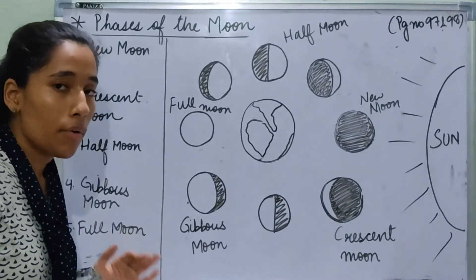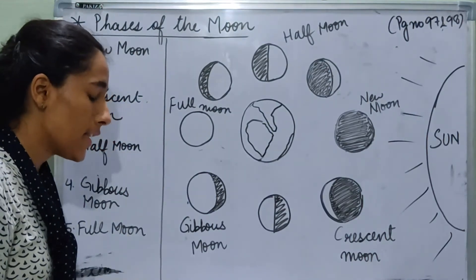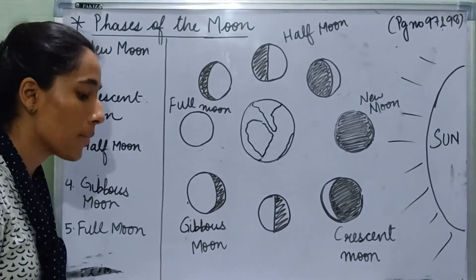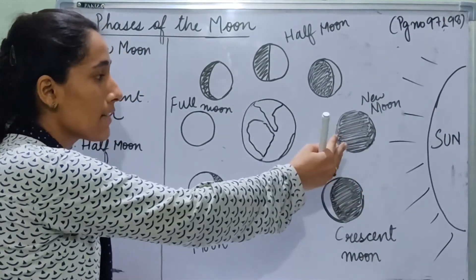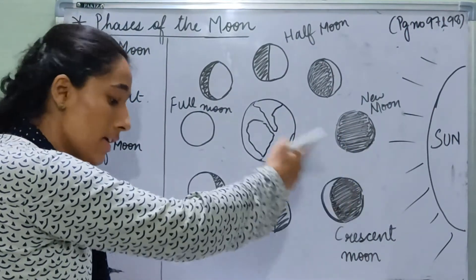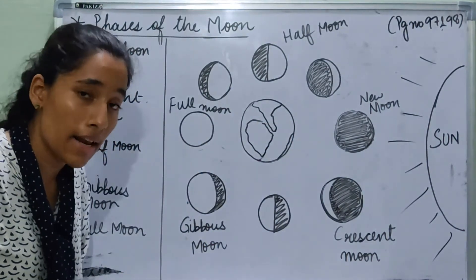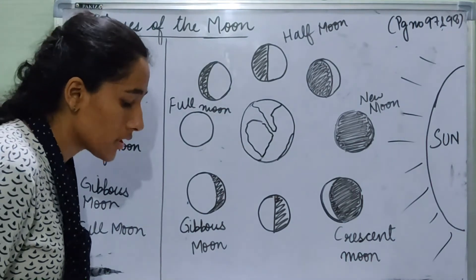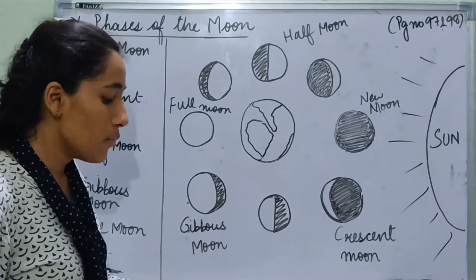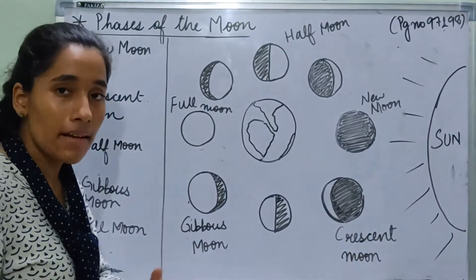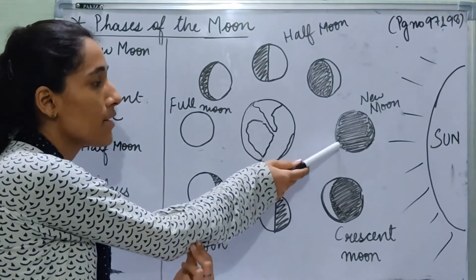Now we are going to learn about the different phases of moon. New moon: in this phase, the illuminated side of the moon is away from the earth. The side of the moon facing the earth receives no sunlight and hence cannot be seen from the earth. This phase is called the new moon — we don't see anything, that is why it is dark.